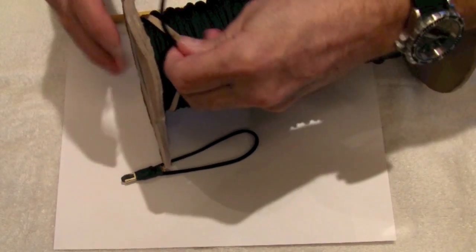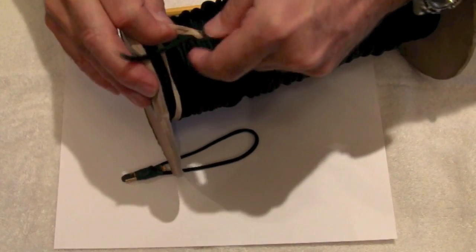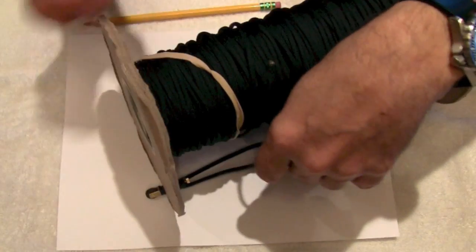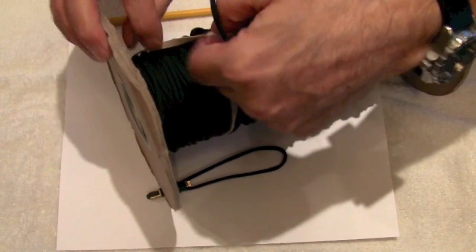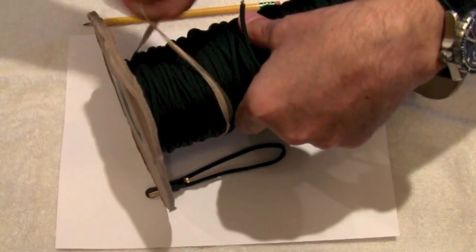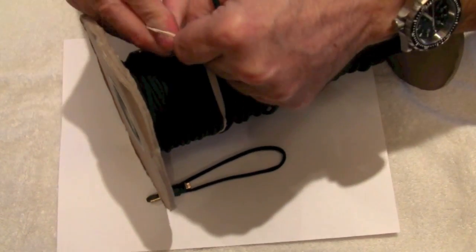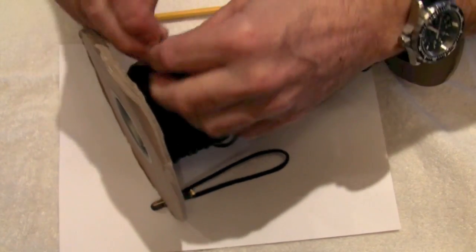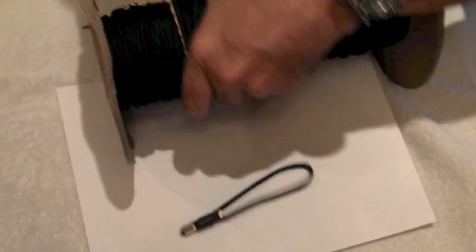Tip for securing paracord on your spools: put a rubber band around the spool, pick it up, put your finger in and just twist around, and run your spare end of the cord through, and that'll keep it in place.